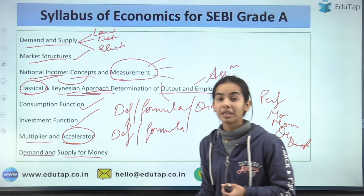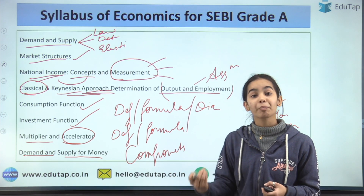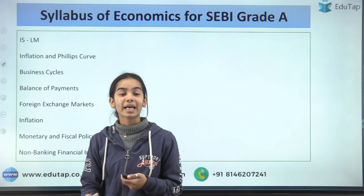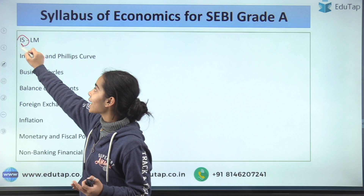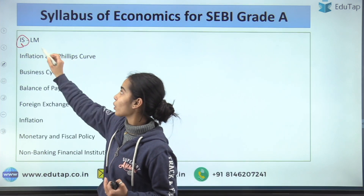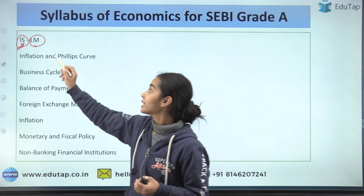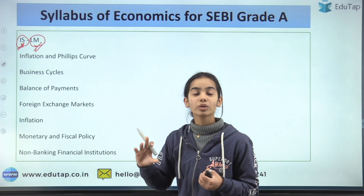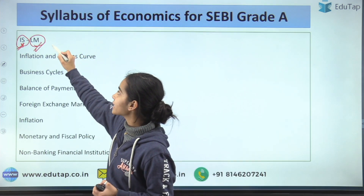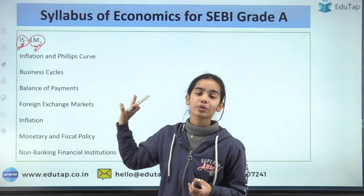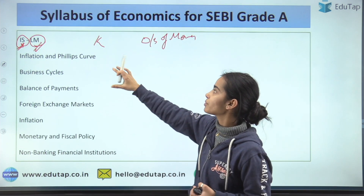Then the demand and supply for money: what is the demand for money, the supply of money, and the components each depends on. Then comes the IS-LM model. The IS curve depends on the Keynesian cross — that is, the goods and product market. The LM curve depends on the demand and supply of money — that is, the money market. If you understand how they are derived and what the two curves mean, you will easily answer any question on the IS-LM model.